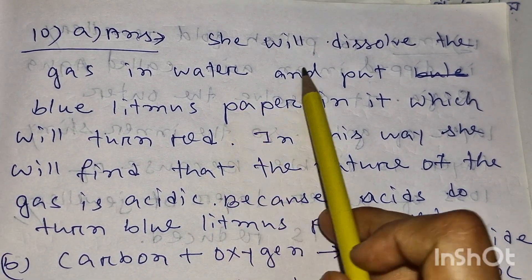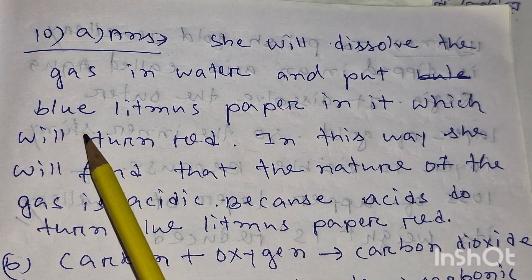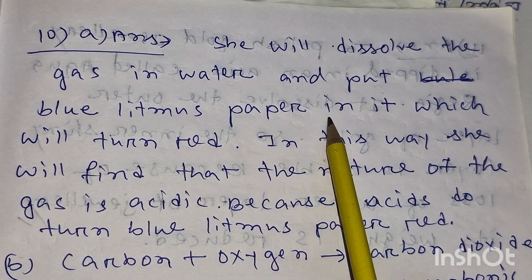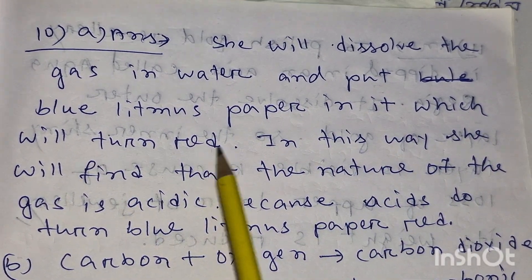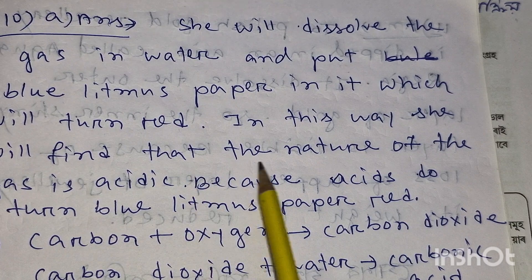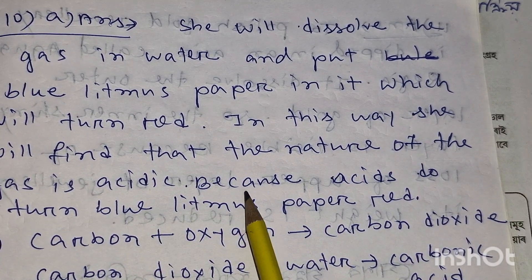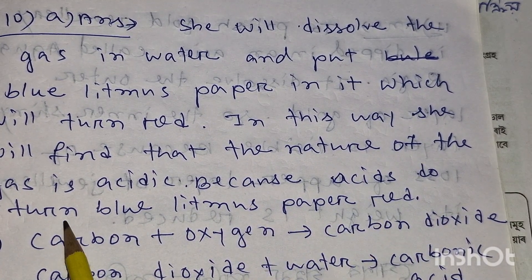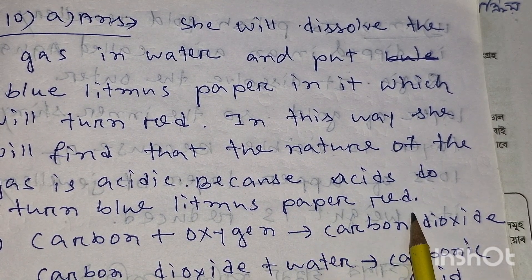She will dissolve the gas in water and place blue litmus paper in it, which will turn red. In this way, she will find that the nature of the gas is acidic, because acid turns blue litmus paper red.